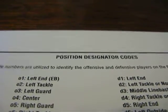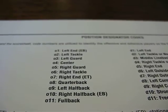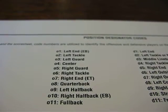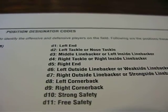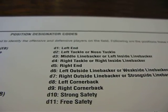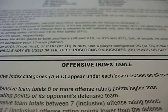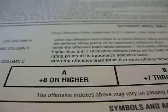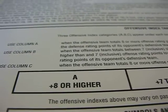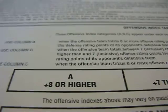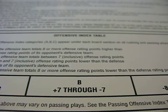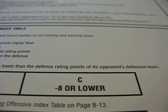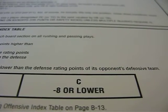the very first page has the position designator codes for the Pro Set Offense, which you're quite familiar with now, and either the 4-3 or 3-4 base defense. Then it covers the offensive index table that you've already learned from the basic game: if a team is 8 index points or higher, they're in A. If they're within the plus 7 to negative 7 window, they're in B. And if they are negative 8 points or lower, they're in C index.